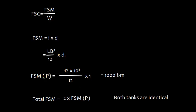Now let's find out FSC, free surface correction, which is given by this formula that FSC is equal to FSM by W. FSM is i into rho. i is Lb³ by 12, so free surface moment of port tank is going to be 12 into 10 raised to the power 3 by 12 into 1, which is 1000 ton-meter.